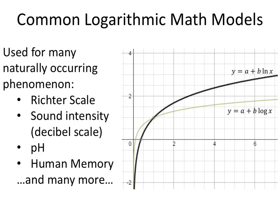Next we have common logarithmic math models, and I've shown these on the same scale so you can see the difference. One is a plus b times ln of x, and this other one is a plus b times log of x. The log one goes more vertical faster and then tapers out, and the ln of x has a different base.